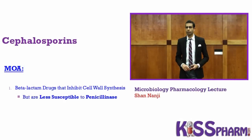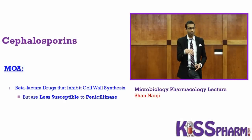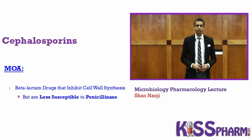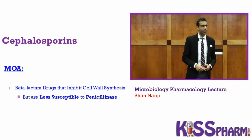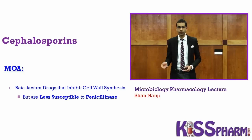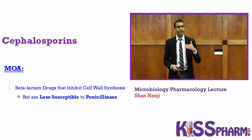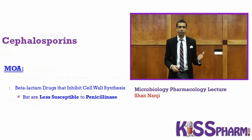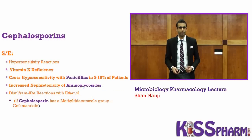There are four generations of cephalosporins. I'm going to give you a pattern to help you remember which ones are which — it's going to be nice and simple. These are also beta-lactam drugs, and they also inhibit cell wall synthesis. But they are less susceptible to penicillinase, meaning they cannot be inactivated as easily as the other drugs we talked about.